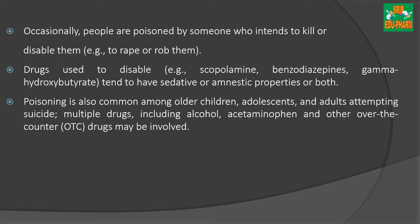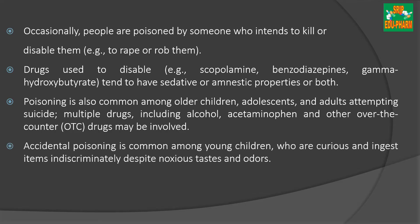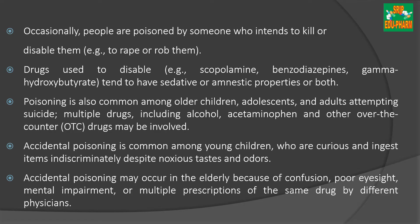Deliberate poisoning is also seen among older children, adolescents, and adults who intend to commit suicide. In such cases, ingestion of multiple drugs including alcohol, acetaminophen, and other over-the-counter drugs may be involved. Accidental poisoning is most commonly seen in young children, as they are curious to ingest items that have different tastes and odors. It also occurs in elderly people due to confusion, poor eyesight, mental impairment, or by using multiple prescriptions of the same drug by different physicians.